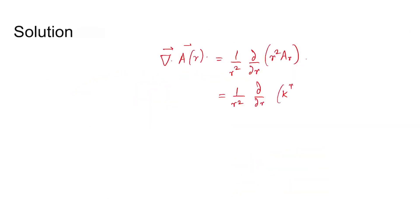We get 1 by r squared taking the derivative with respect to r, so k comes outside: n plus 2 times r to the power n plus 2 minus 1. This equals k by r squared times n plus 2 times r to the power n plus 1.